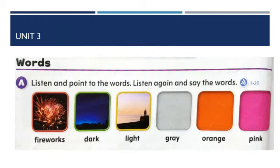Now take out page 34 of your English book. There are some words which you will listen and point to. You will listen again and say the words with me. In the first picture, say 'fireworks.' Fireworks. You can see fireworks at weddings or any parties. In the next picture, there is dark everywhere — there is no light. This is nighttime, so it's dark everywhere. Dark. In the third picture: light.